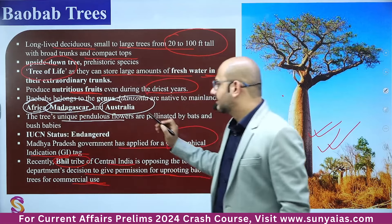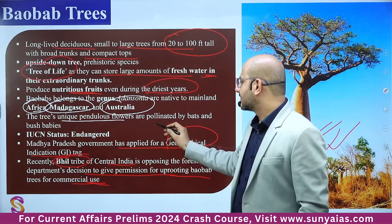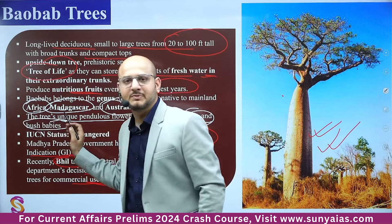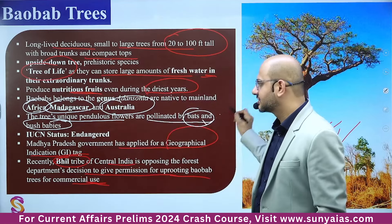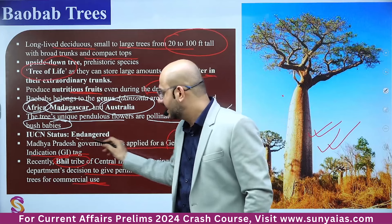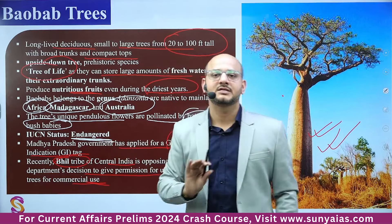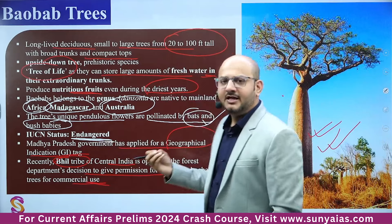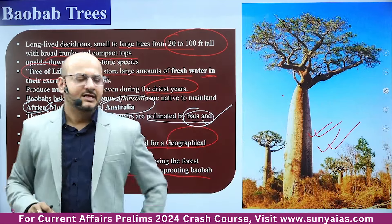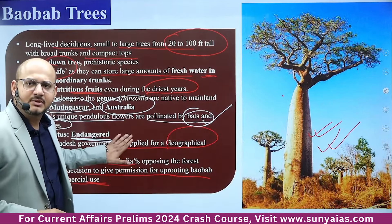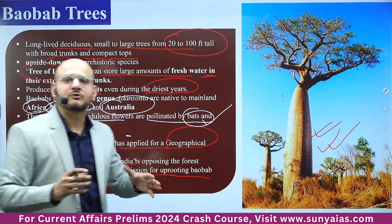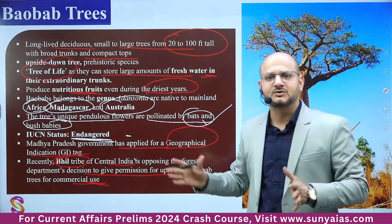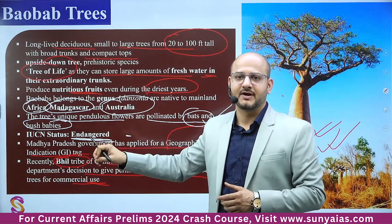The tree's unique pendulous flowers are pollinated by bats and bush babies. The IUCN status of Baobab is Endangered. In India, Baobab trees were brought by Arab traders. They are not only in Madhya Pradesh — you will find them in Prayagraj and various parts of India, including Maharashtra.